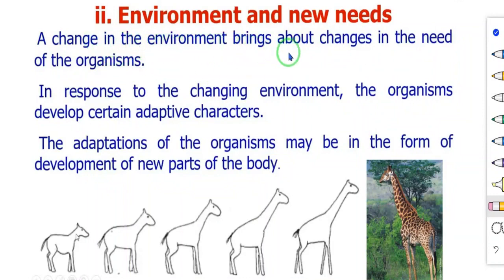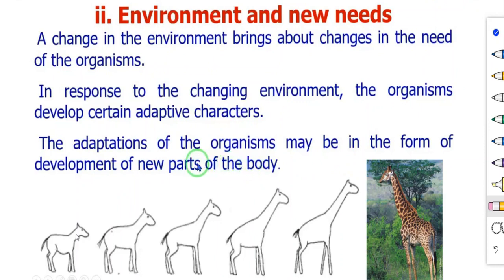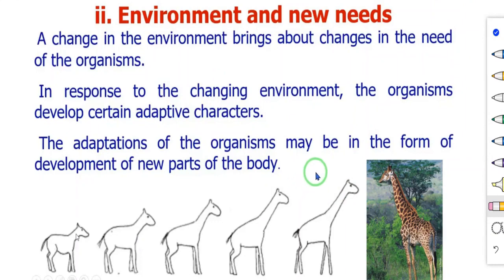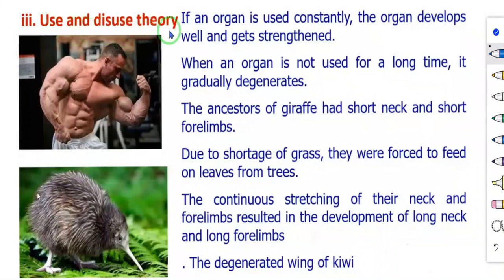The second principle is environment and new needs. A change in the environment brings about changes in the needs of organisms. In response to the changing environment, organisms develop certain adaptive characters. These adaptations may involve development of new body parts, or existing organs may grow larger in size. For example, giraffes once had shorter necks, but because food was scarce at ground level, continuous stretching of the neck resulted in tall necks and tall legs.